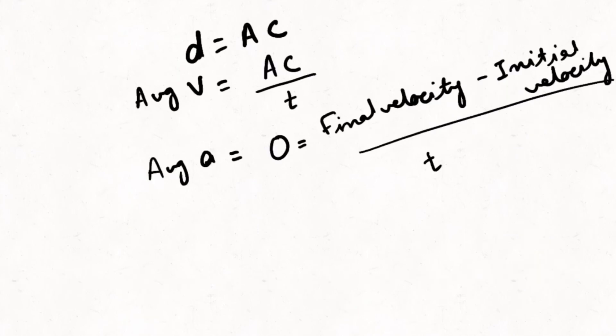Now let's look at the average velocity. It will be AC by T. Average acceleration will be zero because final velocity minus initial velocity by T. Final velocity is zero, initial velocity is zero, therefore the average acceleration will be zero because for some time it was positive, for equal time it was negative.